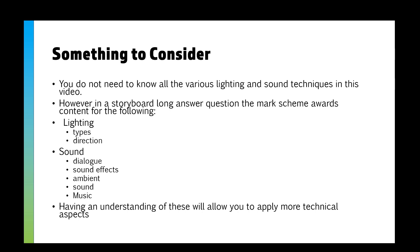You're not going to get full marks if you just write in a storyboard question 'a man's talking for dialogue, there is an explosion in the background, there is some ambient music, trees chirping, and some music playing.' You need to show a varying amount of techniques. However, if you can talk about lighting and sound in any degree, you're already getting yourself two marks — at least two technical aspects. If you look at my storyboard exam question video, which is in the playlist and in the description, I discuss how to get the marks for technical aspects.